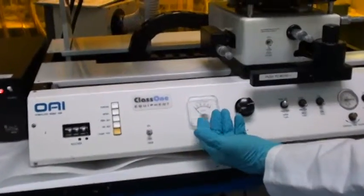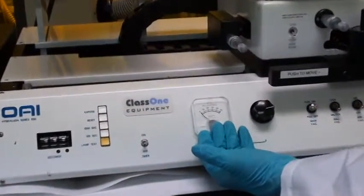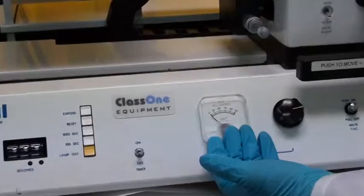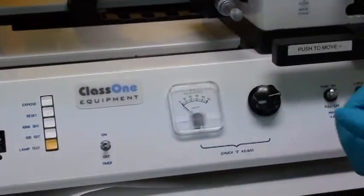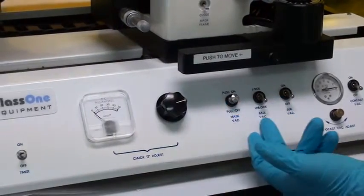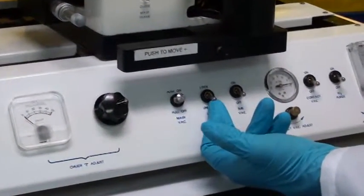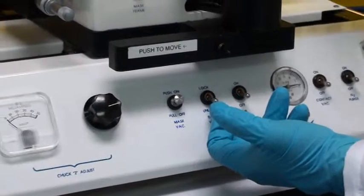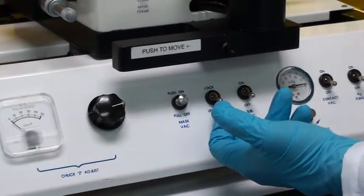This is our current to the clutch for leveling the wafer, which we'll get into in a minute. Here is your mask vacuum to hold your mask onto your mask holder. Next is what we call our ball lock, which will lock our wafer to the proper level.